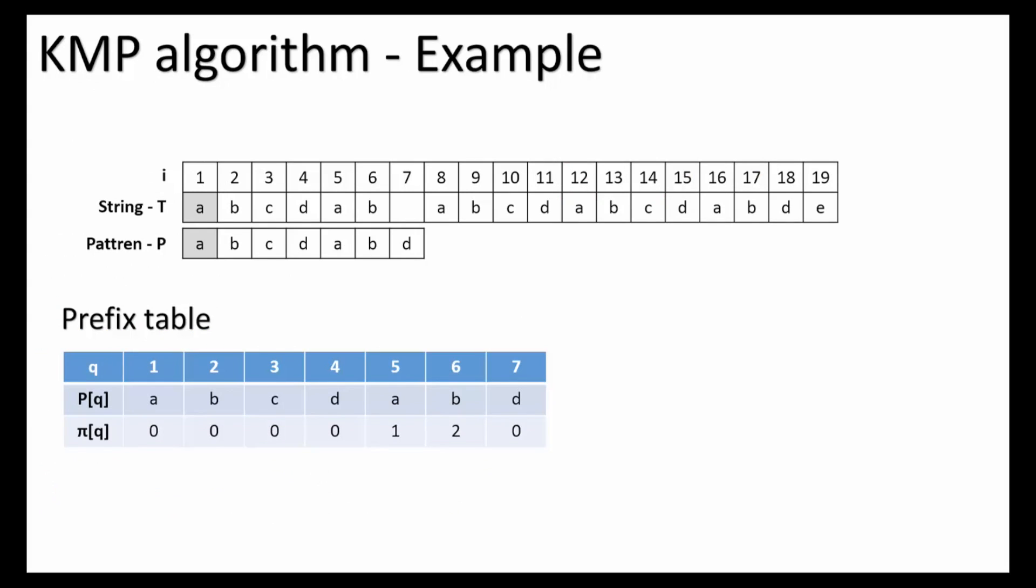We start by comparing each character in the string T and the pattern P. If the current character is successfully matched, we continue to the next character until a mismatch is detected. As we can see, there are six characters a, b, c, d, a, b successfully matched.